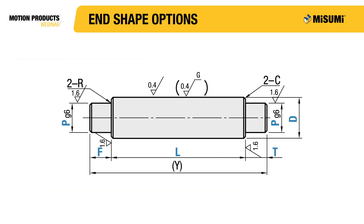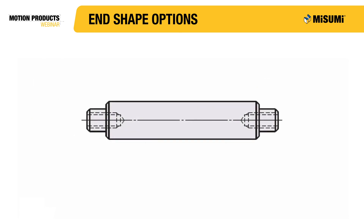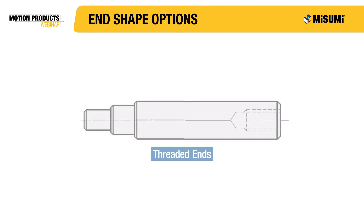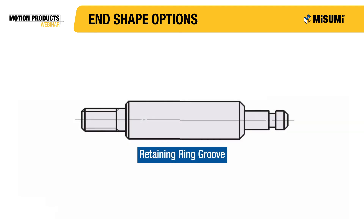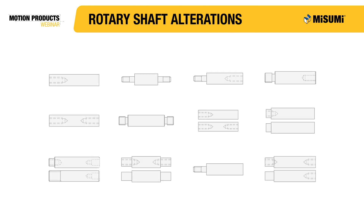With Misumi, you are not restricted to a set shape or dimension. You can configure each end of the shaft differently with features like double stepped ends, tapped ends, threaded ends, stepped with a retaining ring groove, multiple keyways, and many other variations configurable to meet your unique design and application needs.